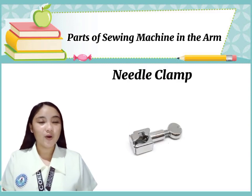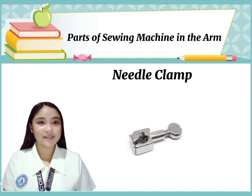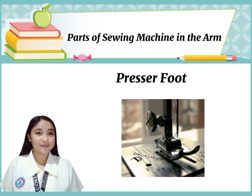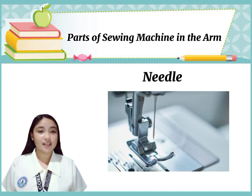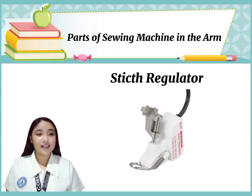Needle clamp holds and tightens the needle. Presser foot holds the fabric in place while sewing. Needle — it is a slender tool attached to the needle clamp, used for sewing. Stitch regulator checks the length of the stitches.